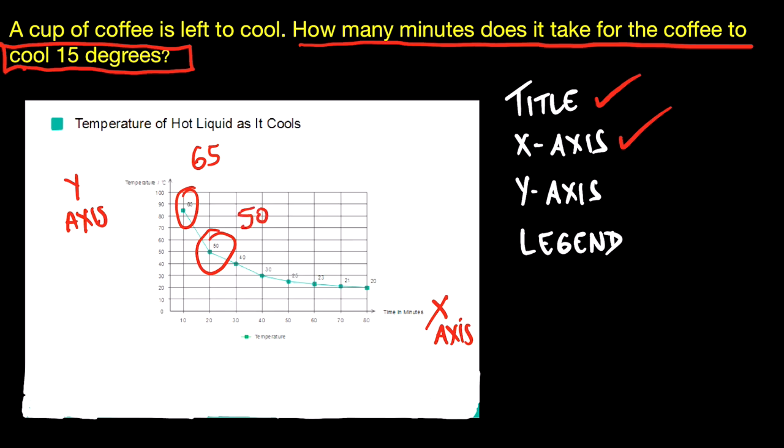So 65 minus 50, that is showing you a 15 degree drop. And the question is asking you how many minutes does it take for this to happen?